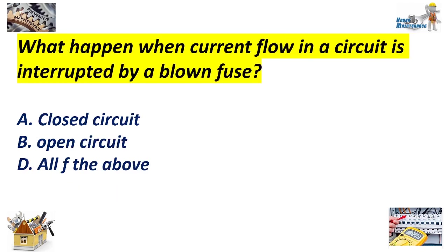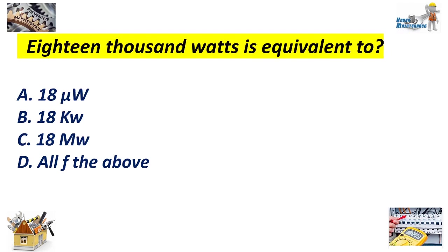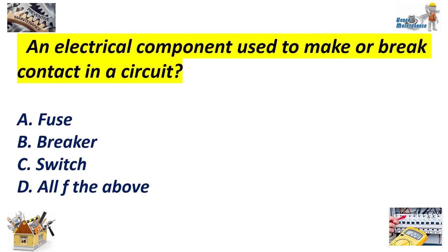What happens when current flow in a circuit is interrupted by a blown fuse? A. Closed circuit. B. Open circuit. D. All of the above. Answer: B. Open circuit. 18,000 watts is equivalent to: A. 18 microwatts. B. 18 kilowatts. C. 18 megawatts. Answer: B. 18 kilowatts. An electrical component used to make or break a contact in a circuit: A. Fuse. B. Blocker. C. Switch. Answer: C. Switch.